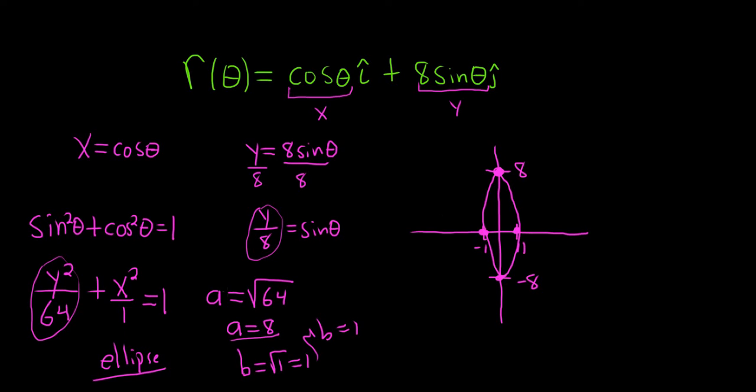Okay. So again, in an ellipse, a is the square root of the bigger number. Because the bigger number is under the y, we go up and down by a. If the bigger number was under the x, like if we had a 64 here instead of a 1, then we would go left and right by 8. All right.